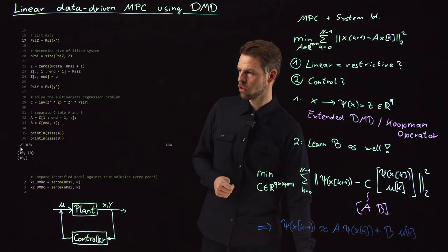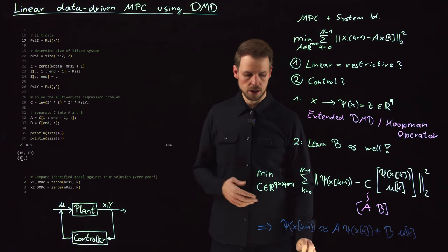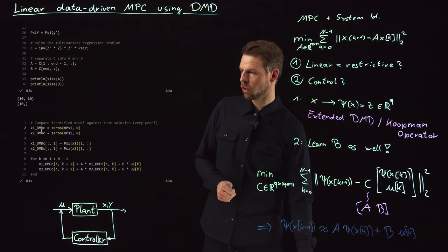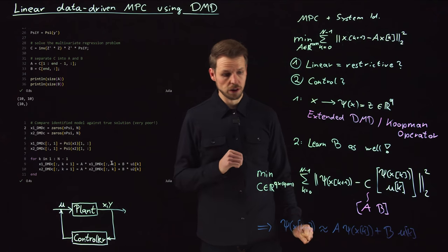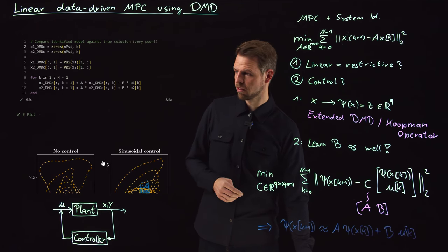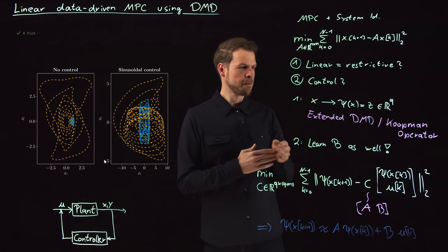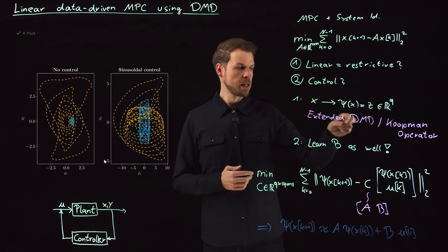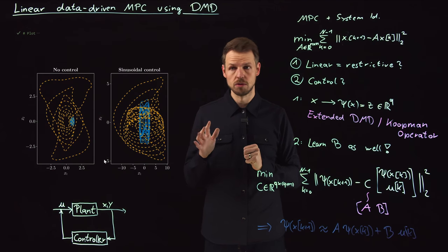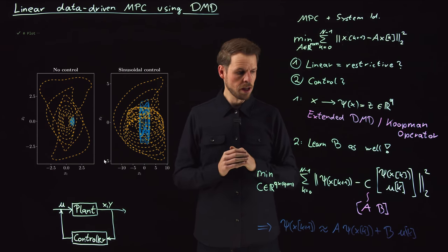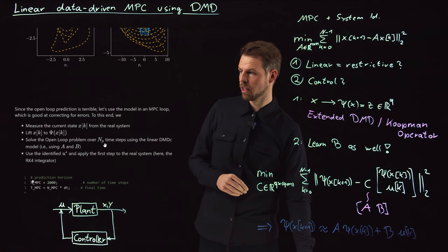And what you can do then is you can compare the system state of the original system to the system state that we propagate in a linear fashion with this identified model. And now, you're in for a surprise, the behavior is actually very terrible. So this is what I said. There's no guarantee that you learn a good model. We lifted it to polynomials of degree three. If you compare this to lifting it to degree two or not lifting it at all, you will see that this is even worse. So we have improved, but clearly this is a terrible model behavior. So open loop control is obviously not possible, this is really horrible.